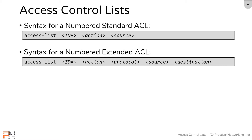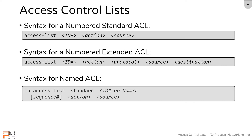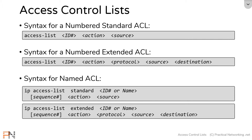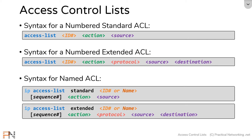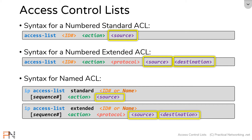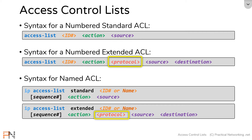In this video, we'll be looking at the syntax to configure a named access list. You'll see that the syntax is largely the same. A lot of the fields we already understand in numbered access list syntax are simply repeated in named ACLs. If we color code the correlation, you'll see that the source and destination in numbered access list is the exact same as the source and destination in named access list. The protocol is the exact same thing as it was in extended numbered access list.